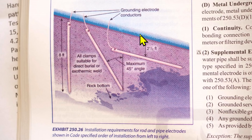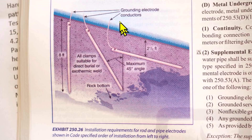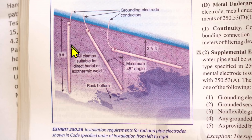Here we have another example of grounding electrode conductors. This is Exhibit 250.26 from the NEC handbook. You see these are wires going to these ground rods. This depiction shows different ways to put in ground rods. You can put it straight down — that's the most common — or you can put them at an angle.